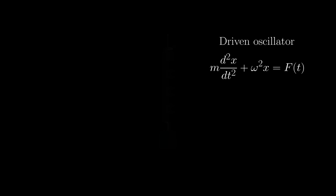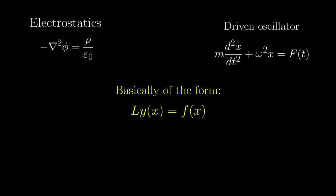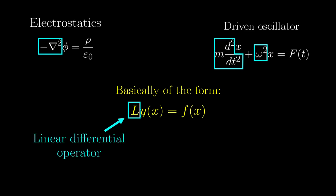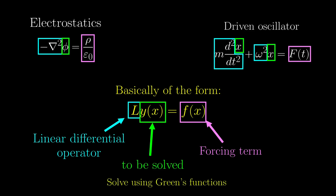What is the common thing in these two equations? Well, they can be written in a very general form: L of y of x equals f of x. L is what's called a linear differential operator, which is not as scary as it sounds. Y is a function of x to be solved, and the right-hand side is some other function which we call the forcing term, which is given. Green's functions can deal with any equation like this, but first we have to talk about what linear differential operators are.